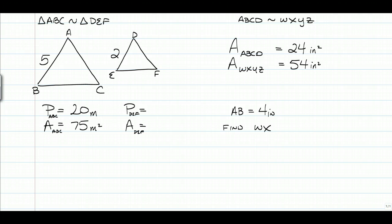So the problem on the left, we have triangle ABC, which is similar to triangle DEF. We know that AB and DE, they are corresponding sides, so they have lengths of 5 and 2. We know that the perimeter of triangle ABC is 20 meters, and the area of triangle ABC is 75 meters squared. So what we're going to do is use ratios to figure out what the perimeter of DEF and the area of DEF are.